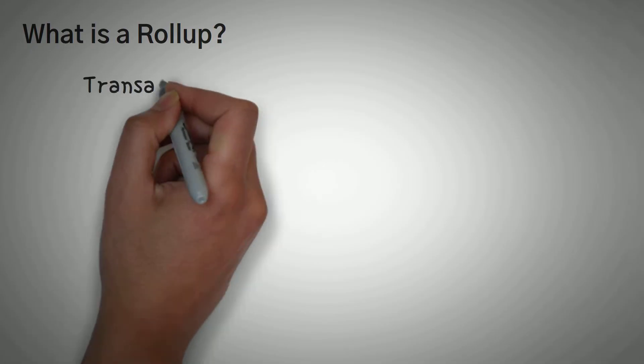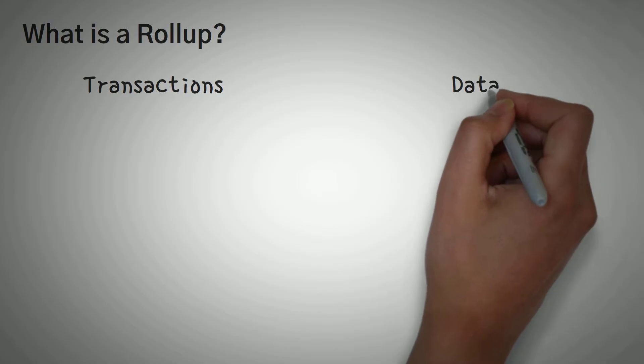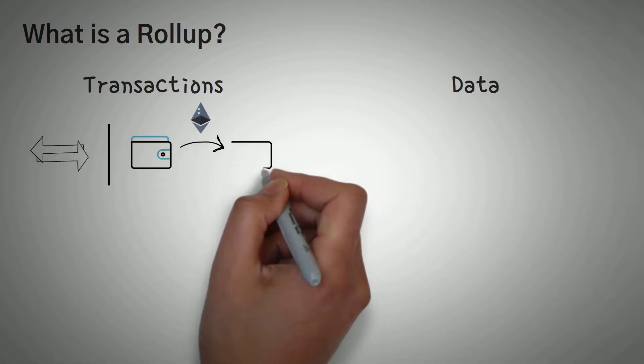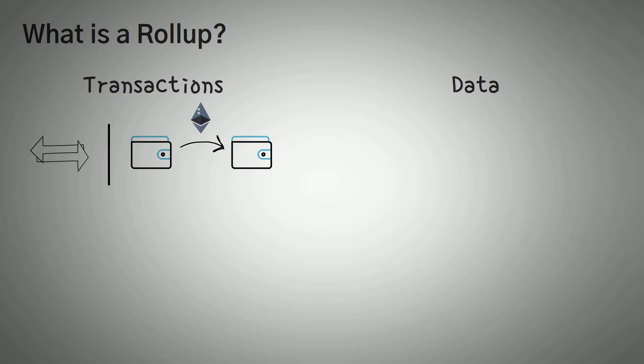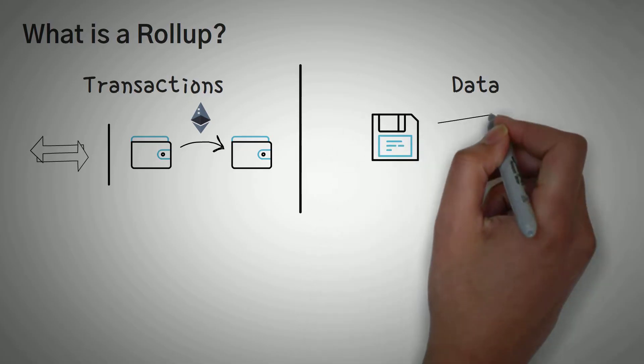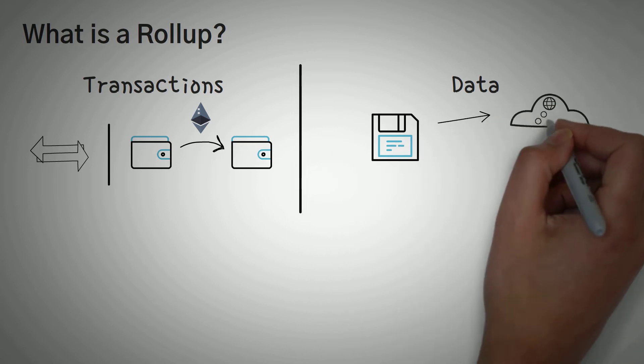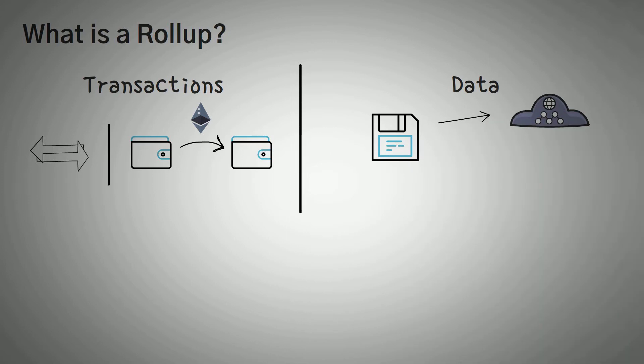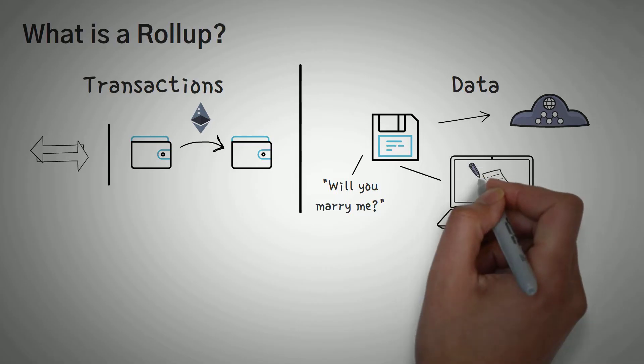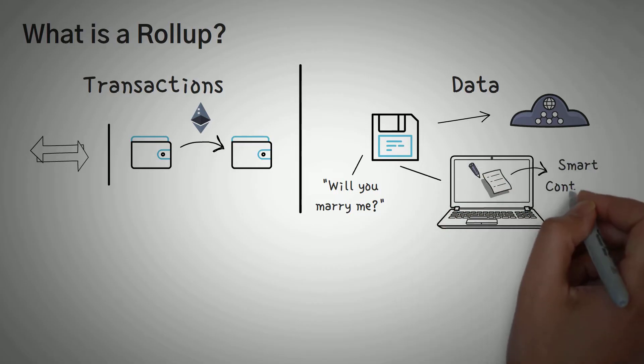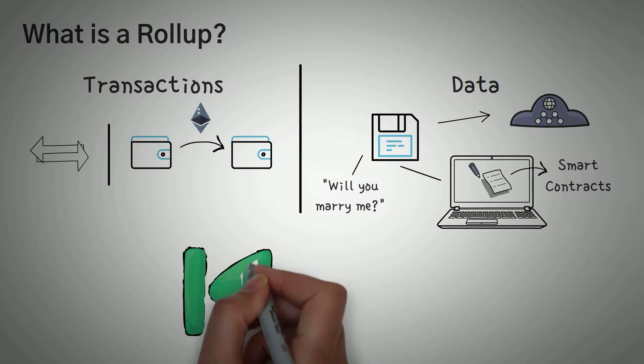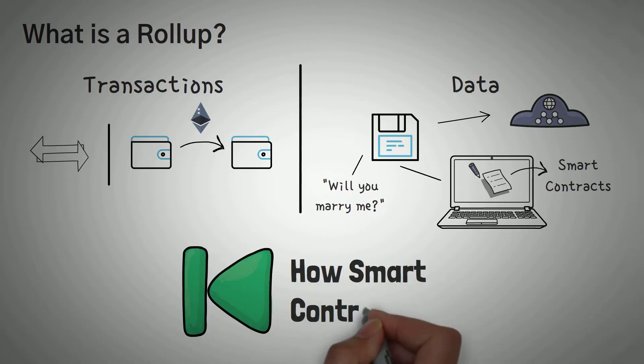On the Ethereum network, there are two things that can be posted on the blockchain: transactions and data. Transactions are when you send Ethereum from one address to another, mimicking exactly how Bitcoin works. What makes Ethereum special is that you can actually store extra data on the Ethereum network. This data can be anything you like. Whenever you write an entire program to be run, that specific data is actually called a smart contract.